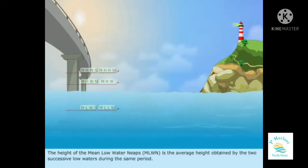The height of the Mean Low Water Neaps, MLWN, is the average height obtained by the two successive low waters during the same period.